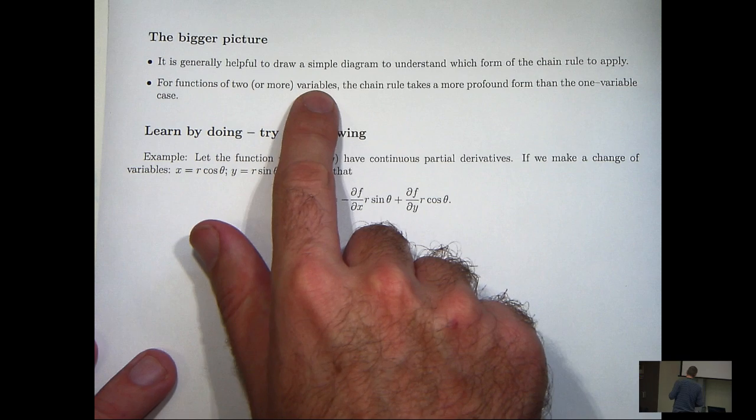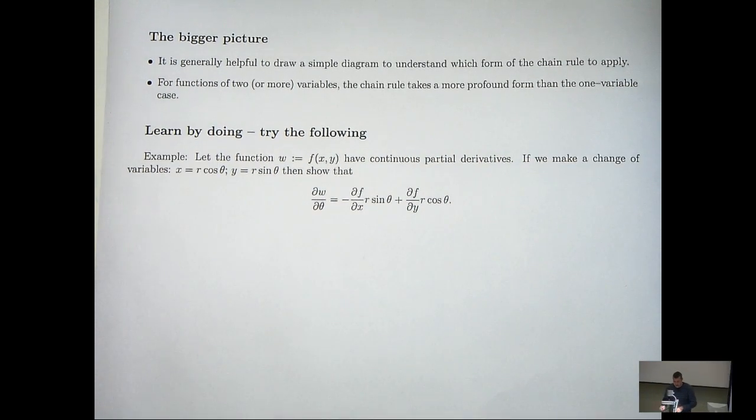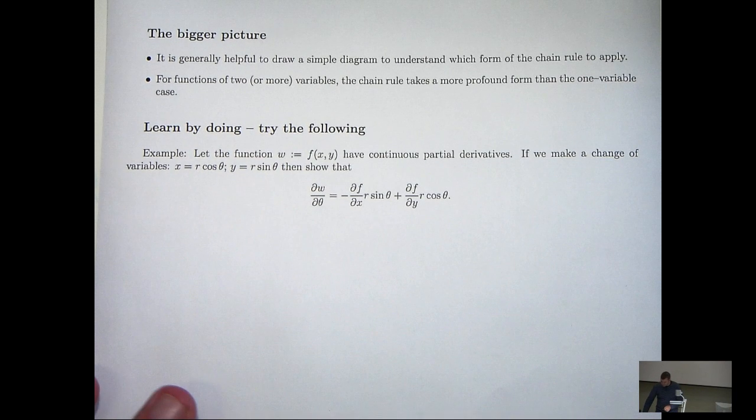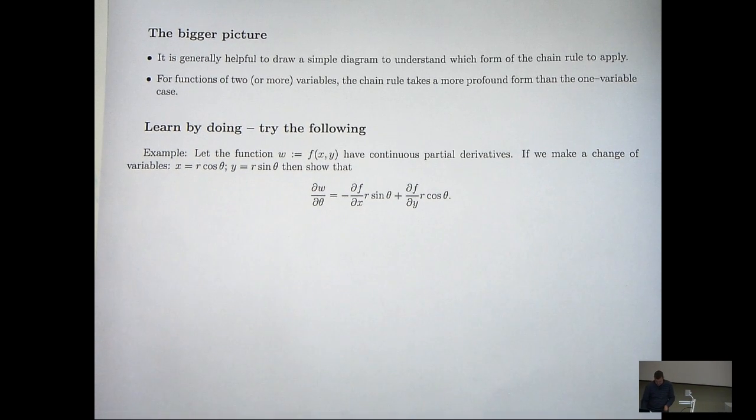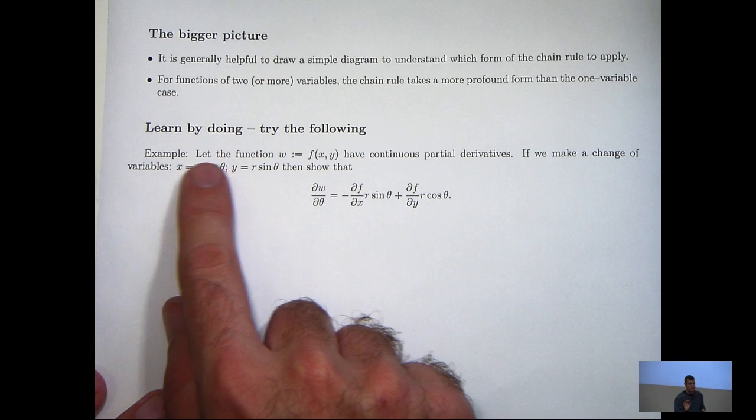For functions of two or more variables, the chain rule takes a more profound form than the one variable case. There's lots of different forms and they're quite complicated. It's important that you learn maths by doing maths. Don't just sit there and watch this video. I encourage you to do some examples and really master this subject.